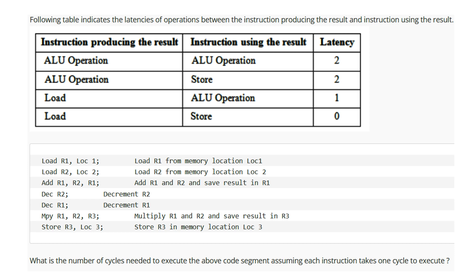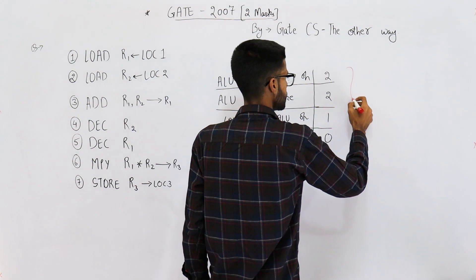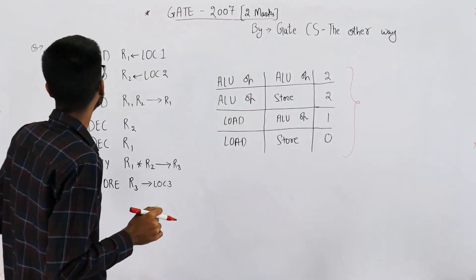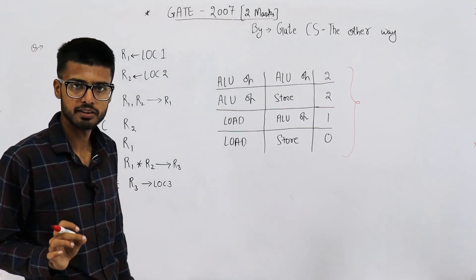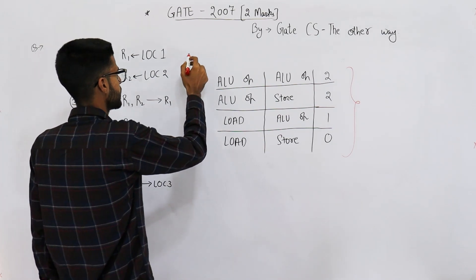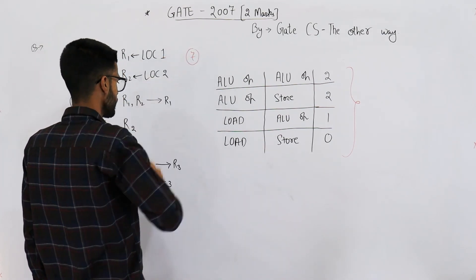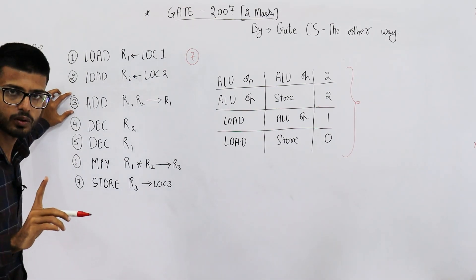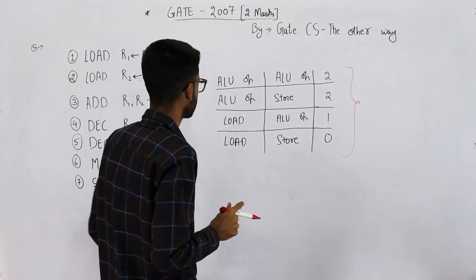Assuming each instruction takes one cycle. Had they not specified anything about the table or latencies, the answer would have been simply seven, because we have seven instructions and each instruction takes one cycle, so total number of cycles would have been seven. Since each instruction takes one clock cycle, this is surely a pipelined CPU.